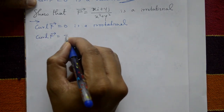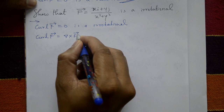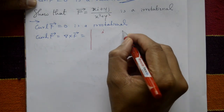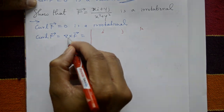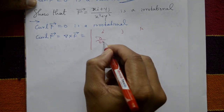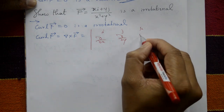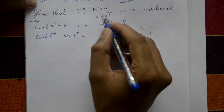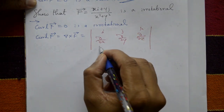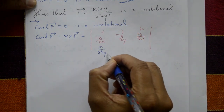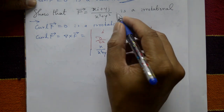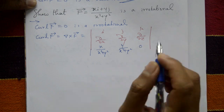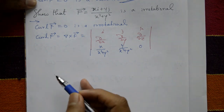Curl of F means del cross F, expanded using a determinant with rows i, j, k; then ∂/∂x, ∂/∂y, ∂/∂z; then the components x/(x²+y²), y/(x²+y²), and 0.